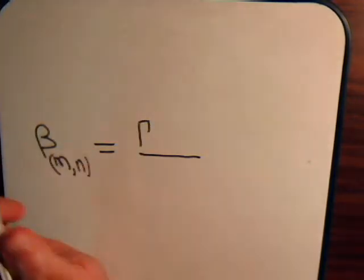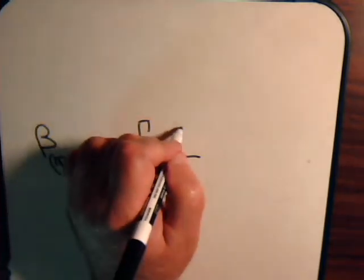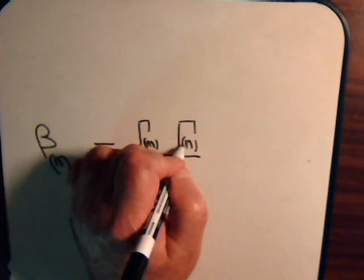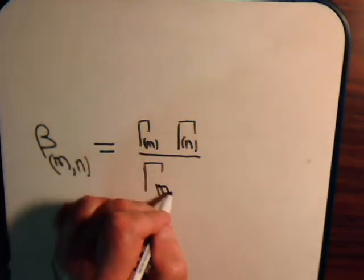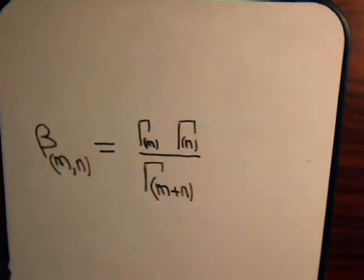So the beta integral of mn, that is equal to the gamma function of m times the gamma function of n, divided by the gamma function of (m plus n). And showing this equation is considerably more involved, so we'll do that in the next video, and as I say, we'll probably have to split that video up into two parts to formally show that this is true.